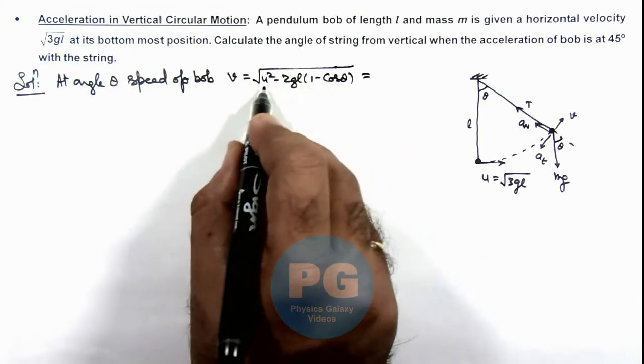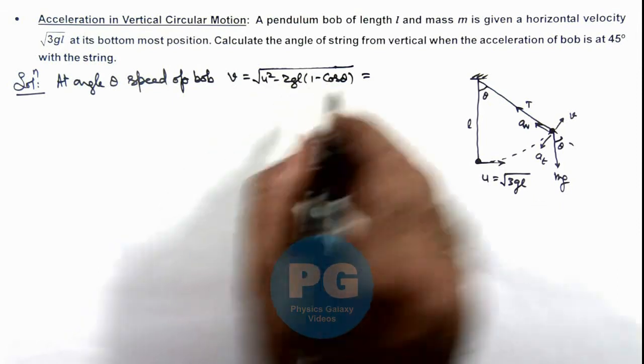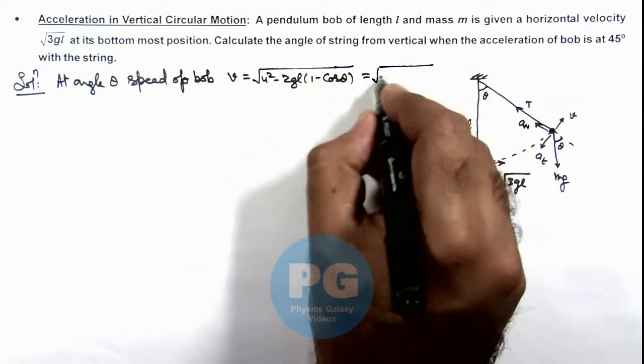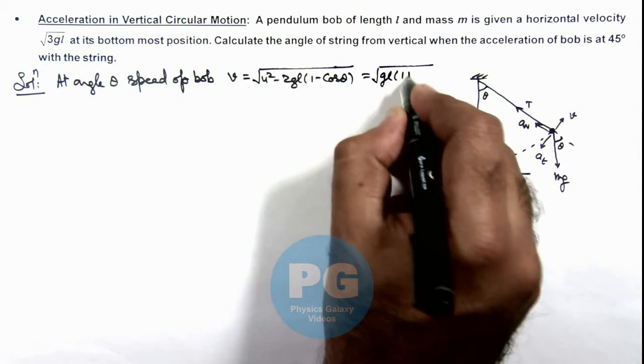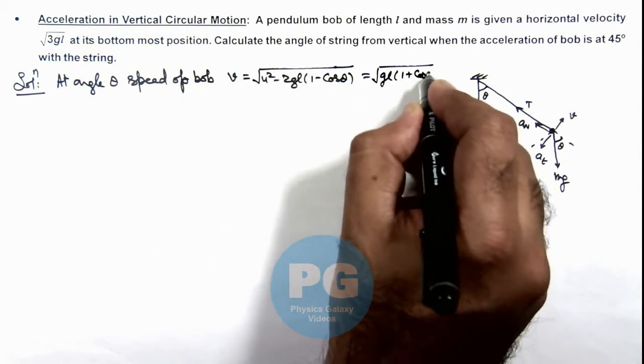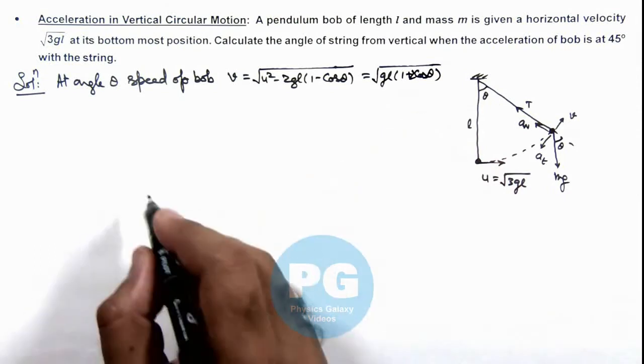So this will become gl + 2gl cos θ, so this is √(gl(1 + 2cos θ)). This is the relation we'll be getting here.